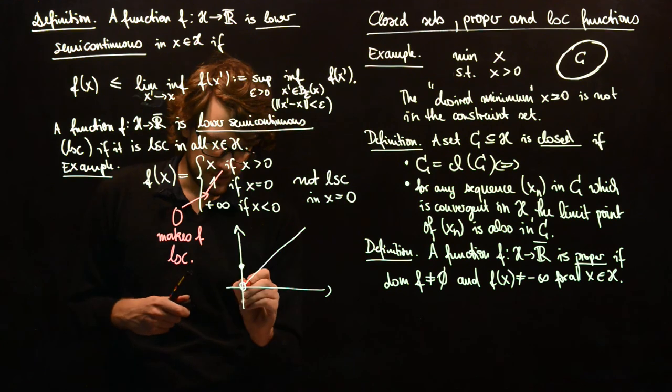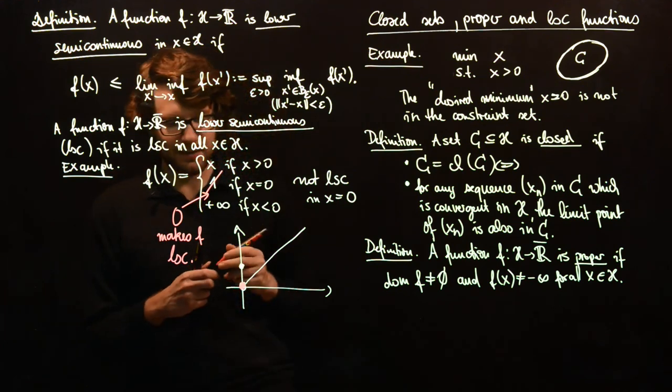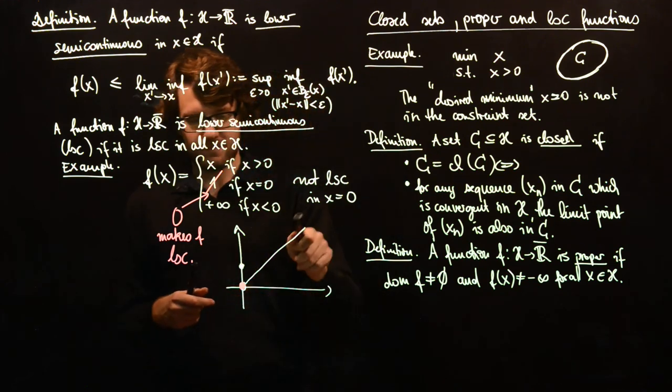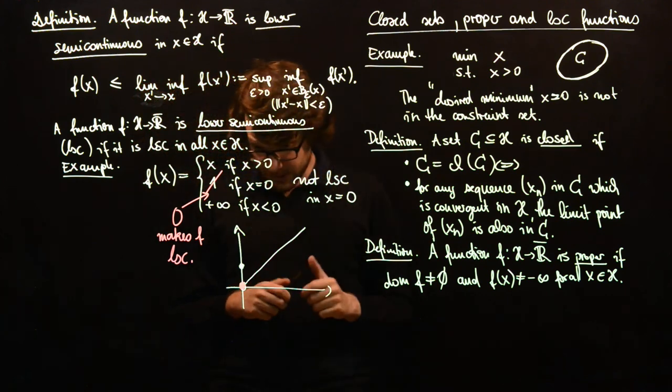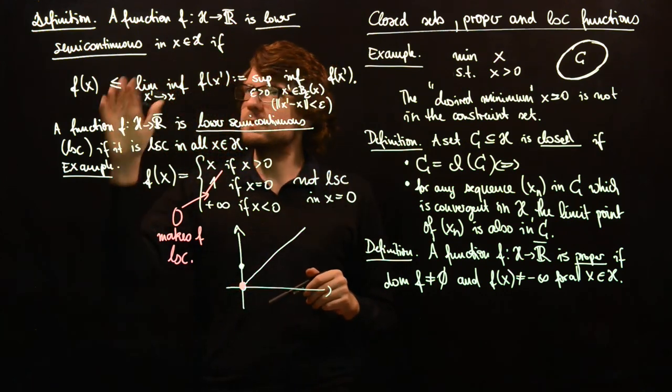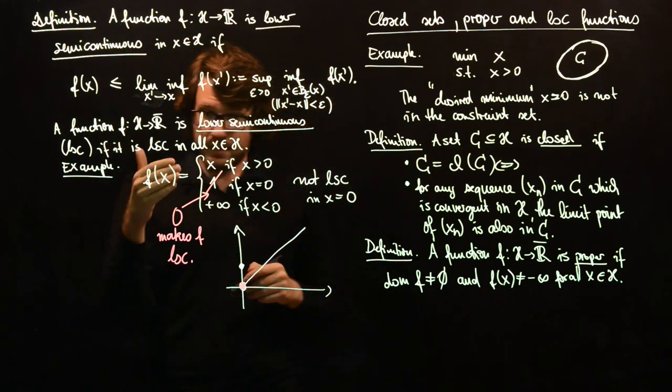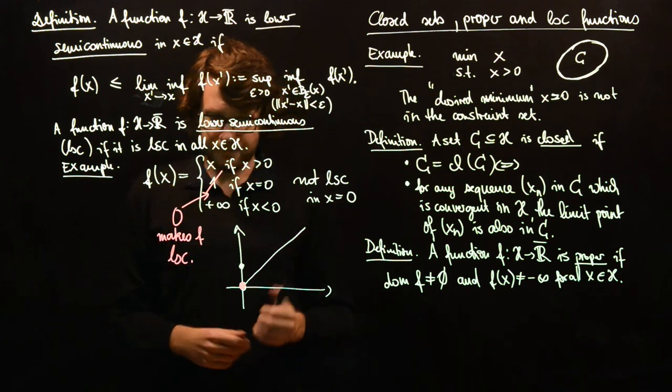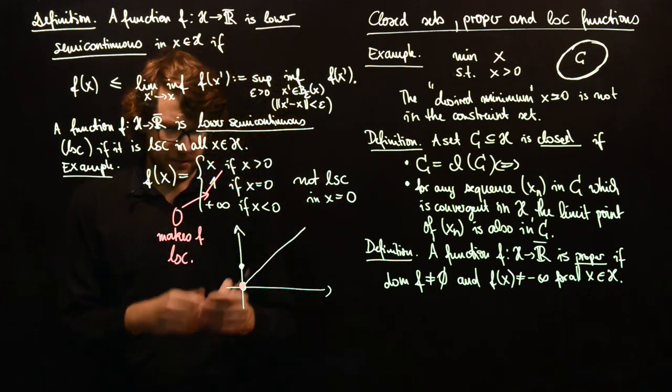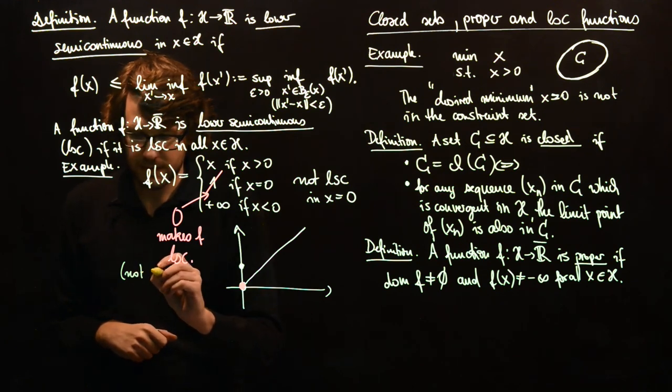Then we would have this function here and then actually everything makes sense. And why do we use lower semi-continuity instead of continuity? The fixed function is still not continuous in 0.